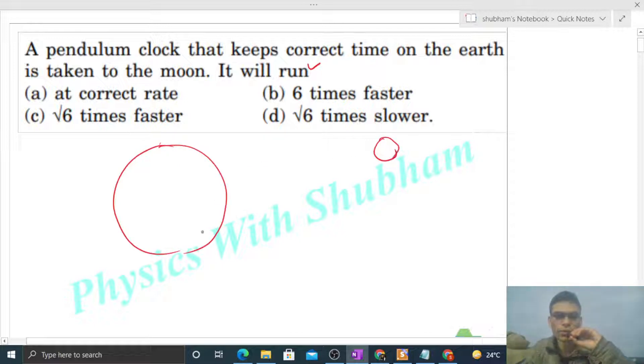If I take acceleration due to gravity on the surface of Earth is g, then Moon ki surface pe acceleration due to gravity hogar, that will be g by 6. Now amari pass a clock, and pendulum clock is a pendulum. Let's say length of the pendulum is l.